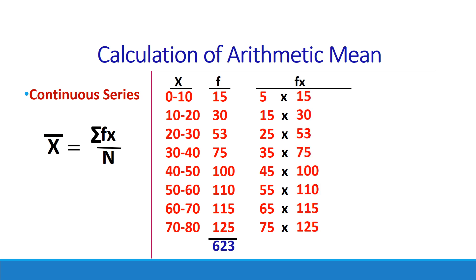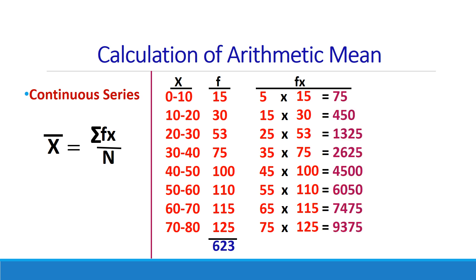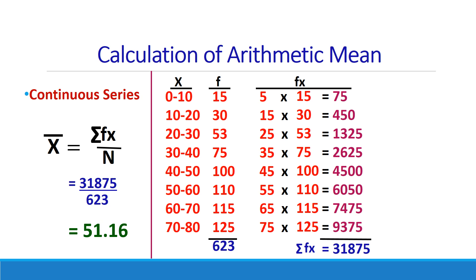Next, we find Σfx by summing up all the results of the multiplication. Σfx is 31875. Applying the formula x̄ = Σfx / n, that is 31875 divided by 623, the result is 51.16. So the arithmetic mean of this continuous series is 51.16.